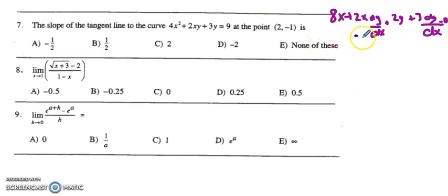Now I put all my terms with dy/dx on one side of the equation. I'm going to have 2x plus 3 because I'm factoring out the dy/dx.